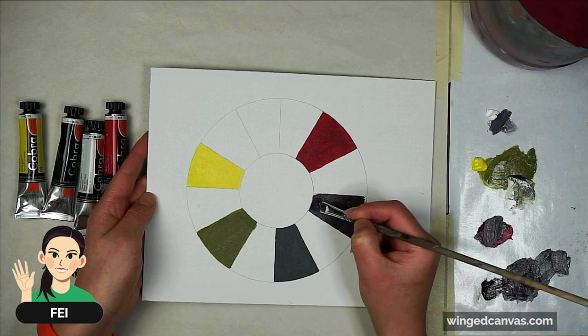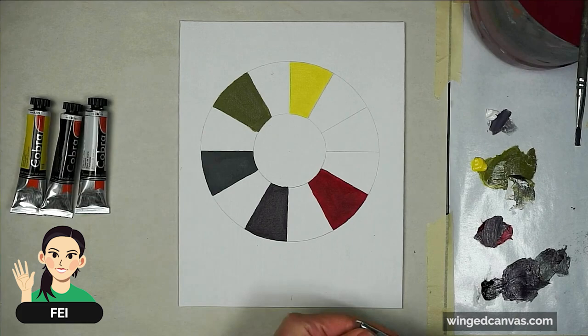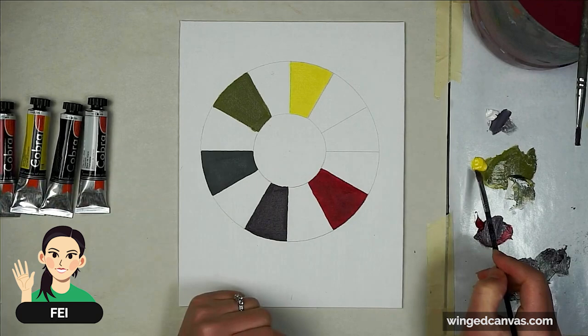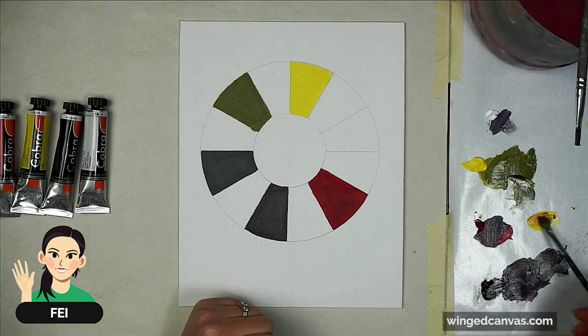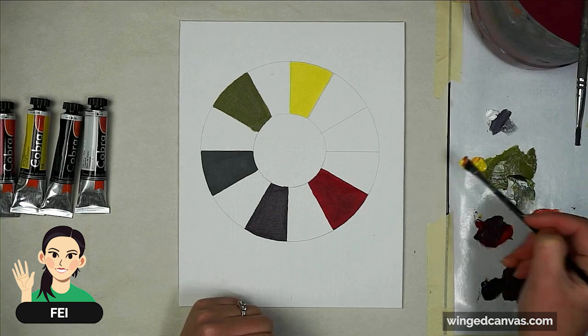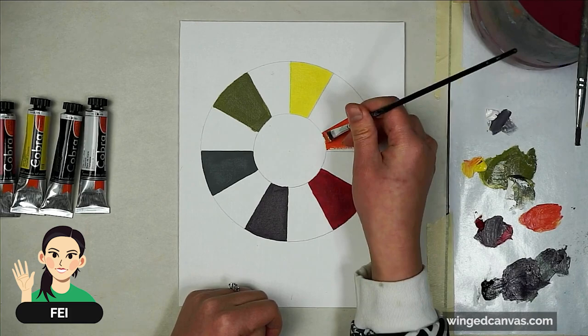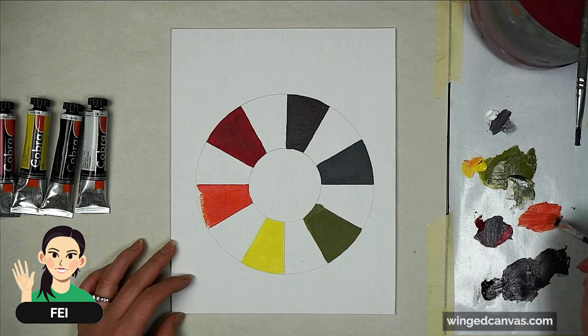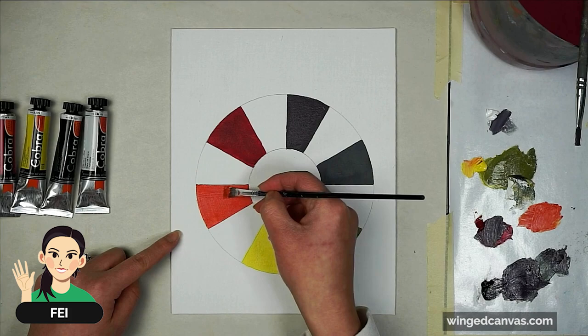Next we're going to paint our orange. The orange is going to look super bright by comparison just because we're using a primary yellow and a primary red. Using a new brush, I'm going to start to mix this orange. You'll notice that you won't need a lot of red at all, quite a bit of yellow and just a tiny bit of red.